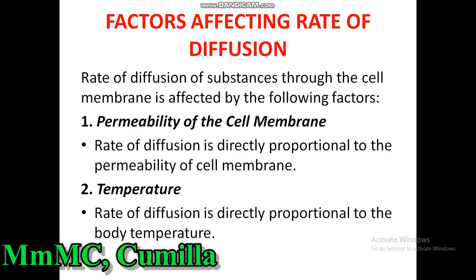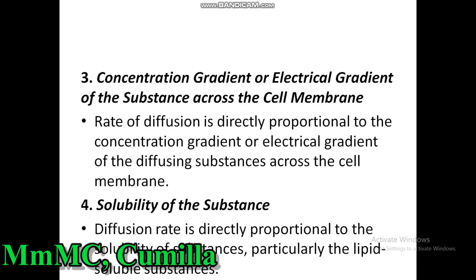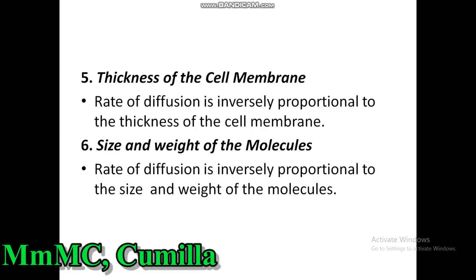Now, the factors affecting the rate of diffusion. Number one: permeability of the cell membrane — the rate of diffusion is directly proportional to the permeability of the cell membrane. Temperature — the rate of diffusion is directly proportional to body temperature. Concentration gradient or electrical gradient — the rate of diffusion is directly proportional to the concentration or electrical gradient across the cell membrane. Solubility of the cell membrane — diffusion rate is directly proportional to solubility, and lipid-soluble substances can easily pass through the cell membrane. Thickness of the cell membrane — the rate of diffusion is inversely proportional to membrane thickness, and molecular size and weight are also inversely proportional to the rate of diffusion.